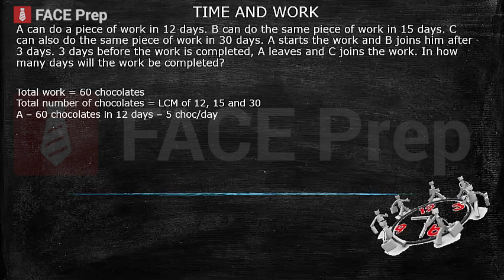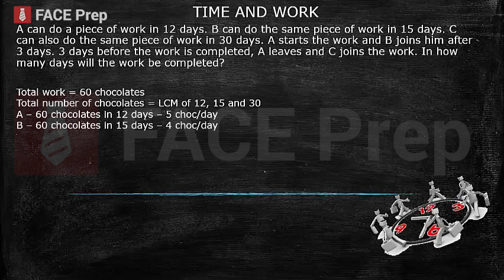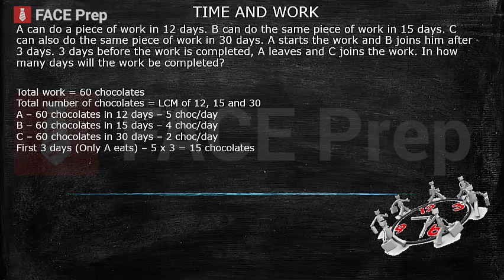A can eat 60 chocolates in 12 days, so A's per day efficiency is 5 chocolates per day. B can eat 60 chocolates in 15 days, so B eats 4 chocolates in a day. C eats 60 chocolates in 30 days, that means 2 chocolates per day.